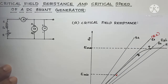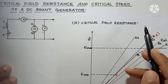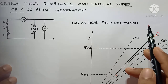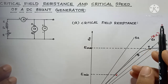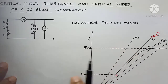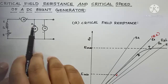In this video we are going to see what is meant by the critical field resistance and critical speed of a DC shunt generator. We will get this critical field resistance and critical speed from the open circuit characteristics, that is the no-load characteristics. For this purpose we can use this experimental setup.